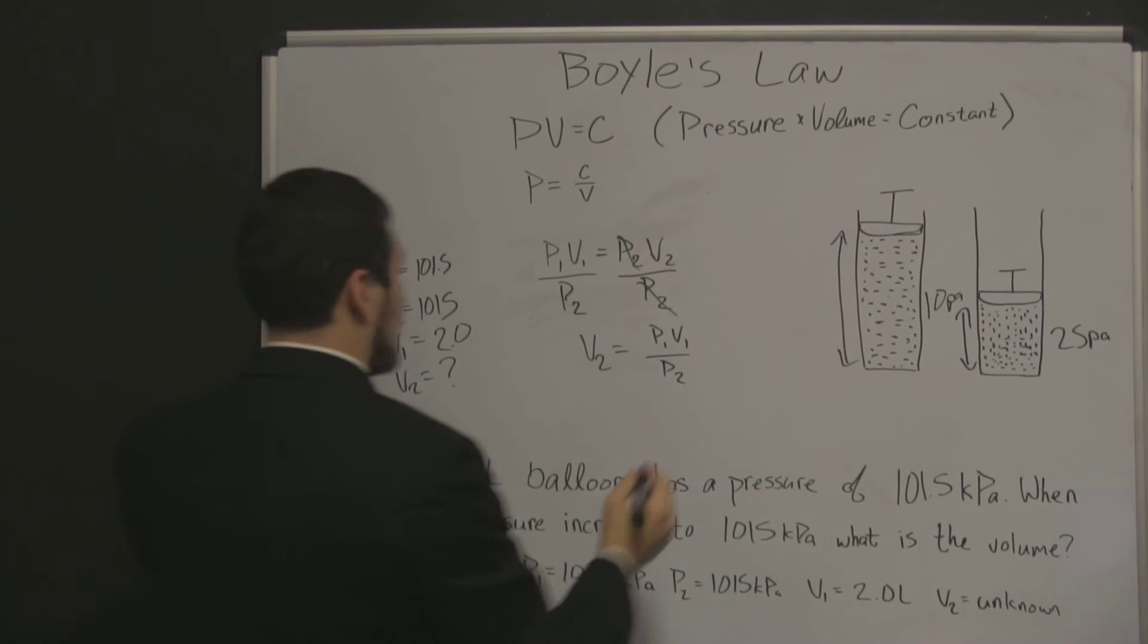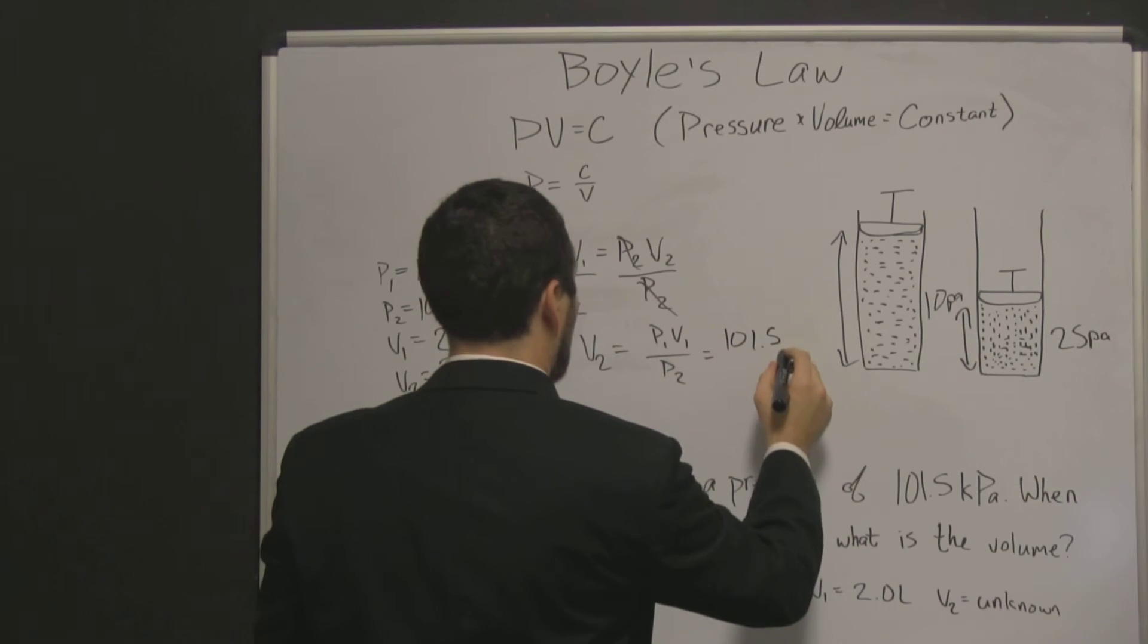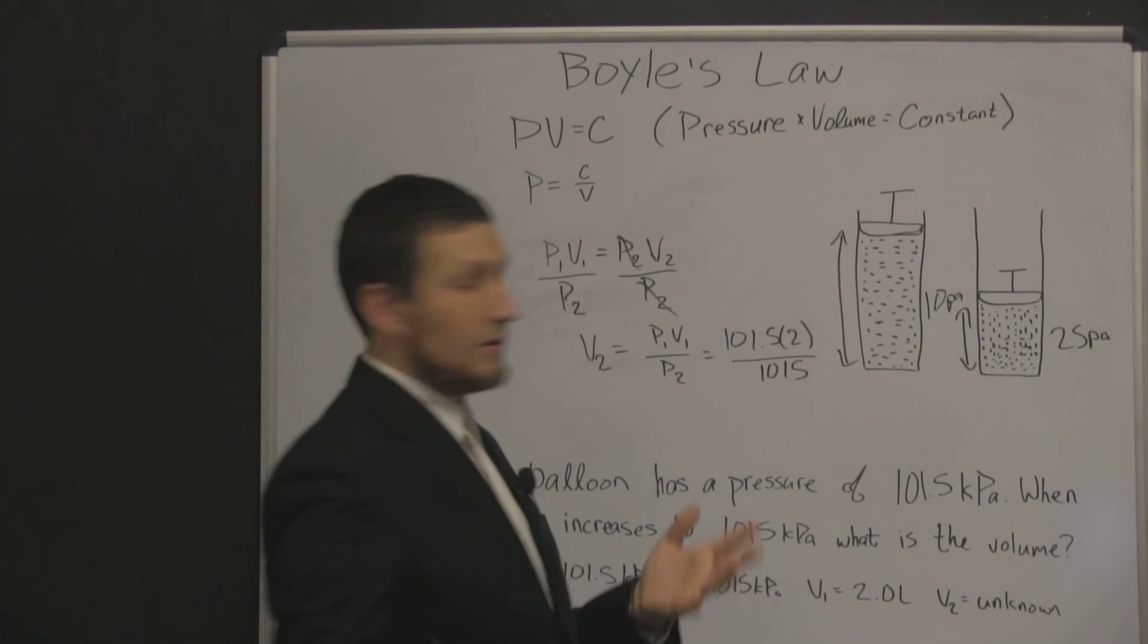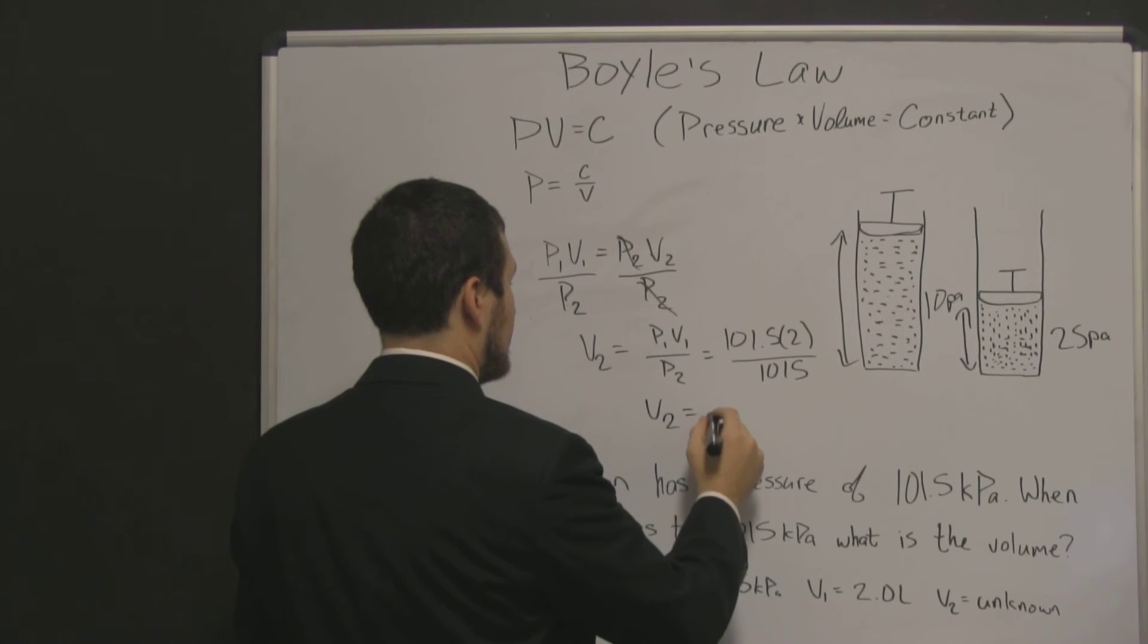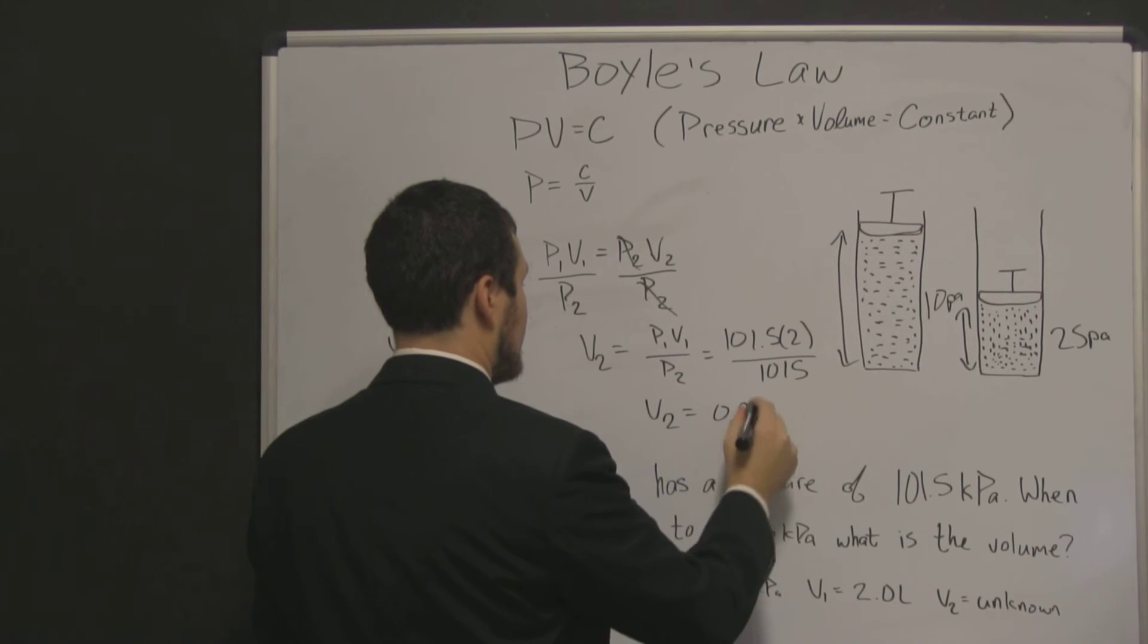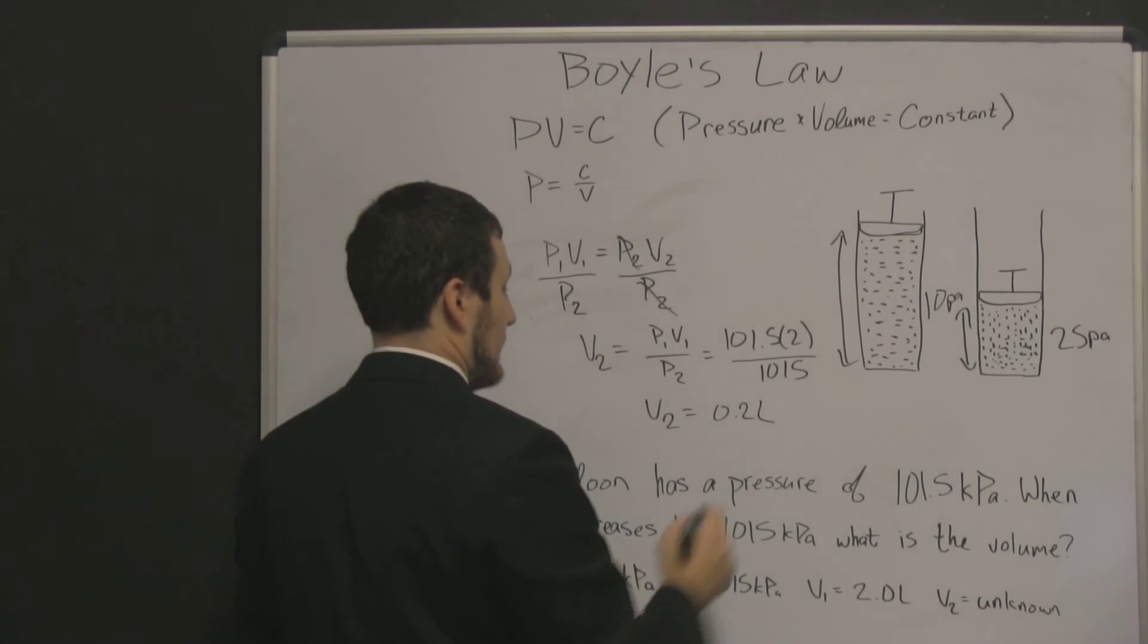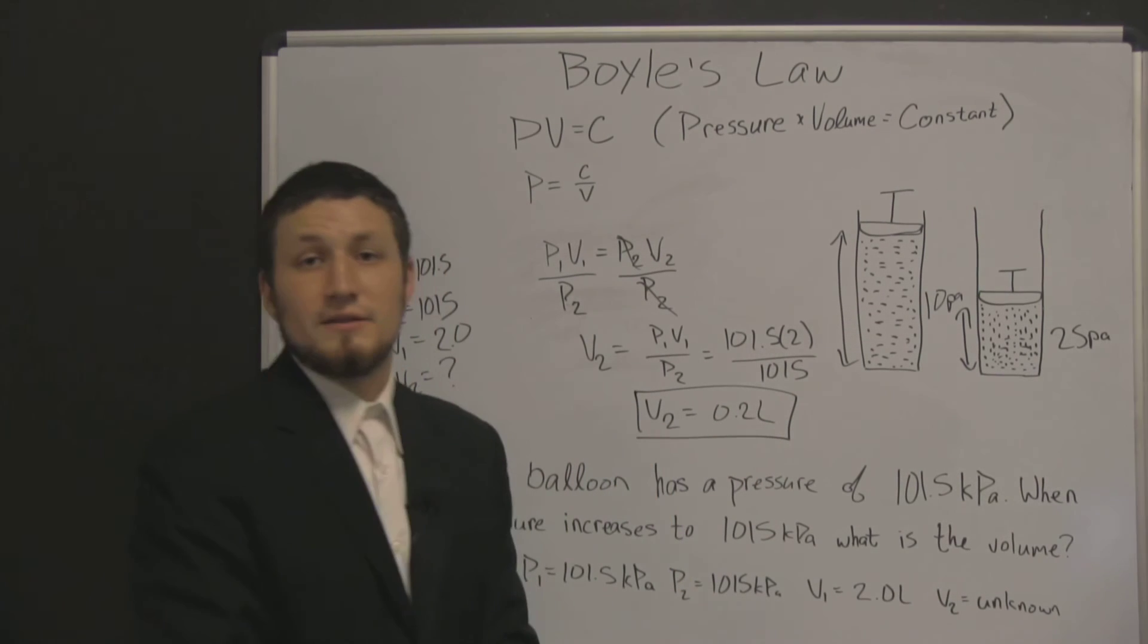And we plug in our numbers there and we get 101.5 times 2 over 1015. Now when we do all our solving, we get that volume 2 is equal to 0.2 liters. So we had a decrease in our volume to 0.2 liters. And that is Boyle's Law.